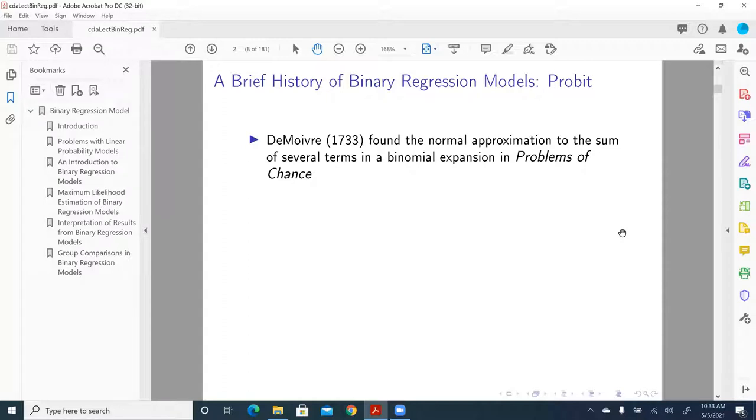Let me give you a brief history of binary regression models. We have different types of binary regression models depending on how one chooses the distribution of error terms. First, let me talk about a brief history of probit model when the error term in the structural model is assumed to follow a standard normal distribution.